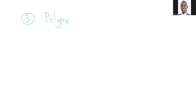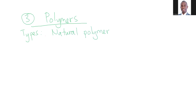Here we have the third part, which is the polymers. For the polymers, you need to remember that you have two types. Number one type is called the natural polymers. Natural polymers include things like cellulose and things like silk — those ones are natural polymers.